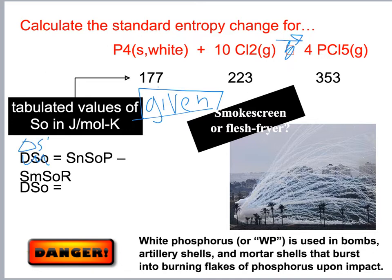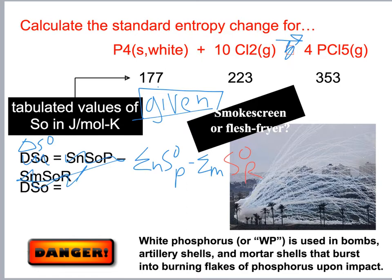Delta S naught equals the sum of the entropy of the products minus the sum of the entropy of the reactants.